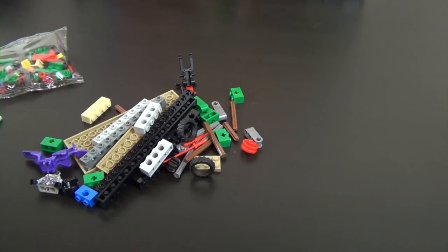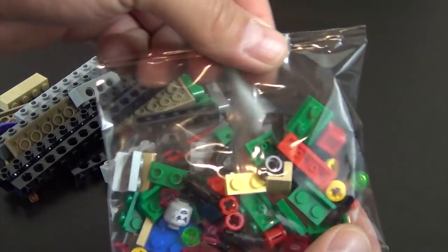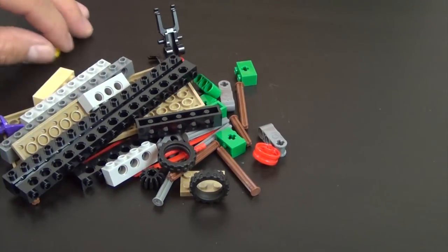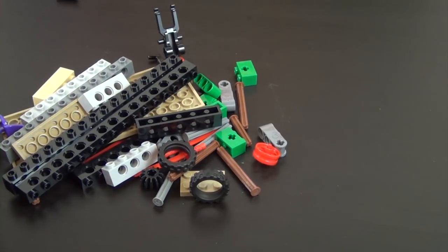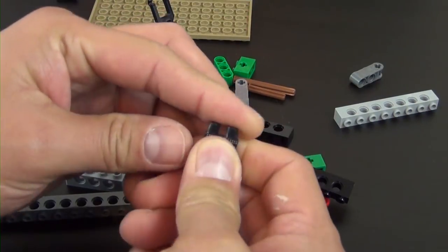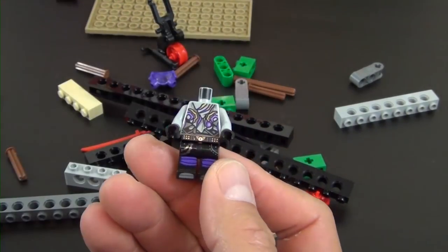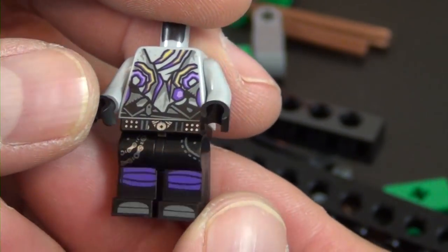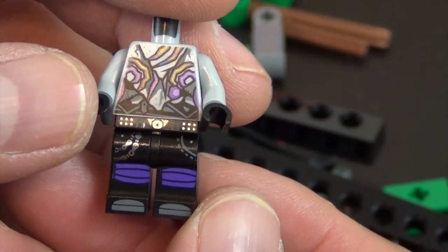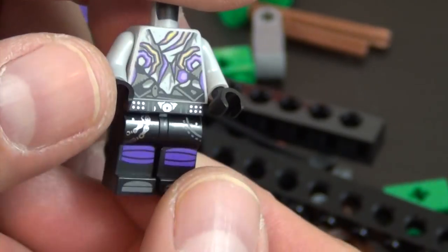So bag one out. We have our first small bag of parts. Let's jump right into this. We have our minifigure, this is Ultraviolet. So she has some pretty cool pants. I actually like those pants a lot. Has little pockets and little chain hanging off over here, some knee pads.